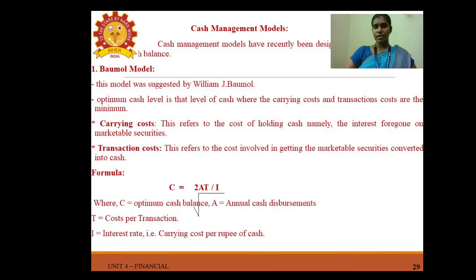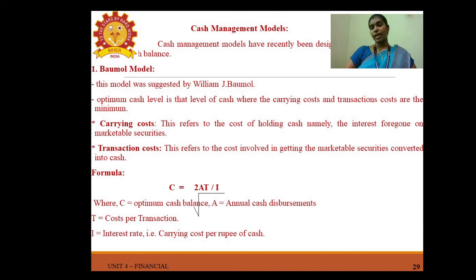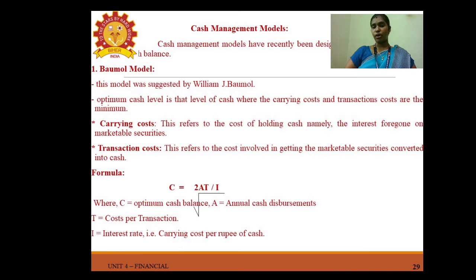Cash management models — Baumol model: suggested by William J. Baumol, the optimum cash level is where the carrying cost and transaction cost are minimum. Carrying cost refers to the cost of holding cash, namely the interest foregone on marketable securities. Transaction cost refers to the cost involved in converting marketable securities into cash. Formula: C = √(2BT ÷ i), where C = optimum cash balance, B = cost per transaction, T = annual cash disbursement, and i = interest rate (carrying cost per rupee of cash).